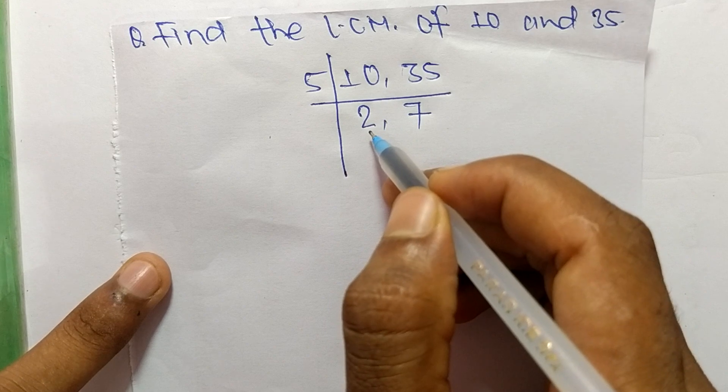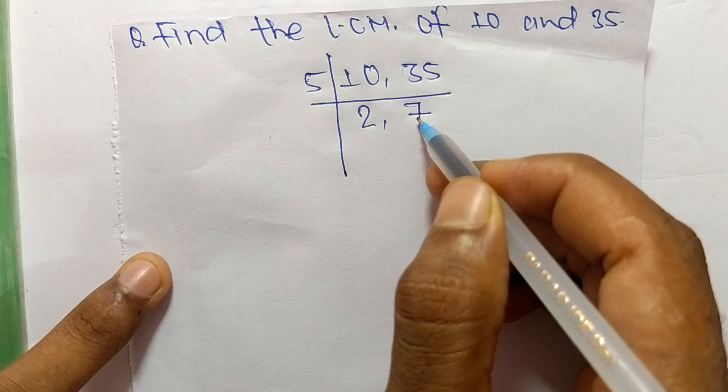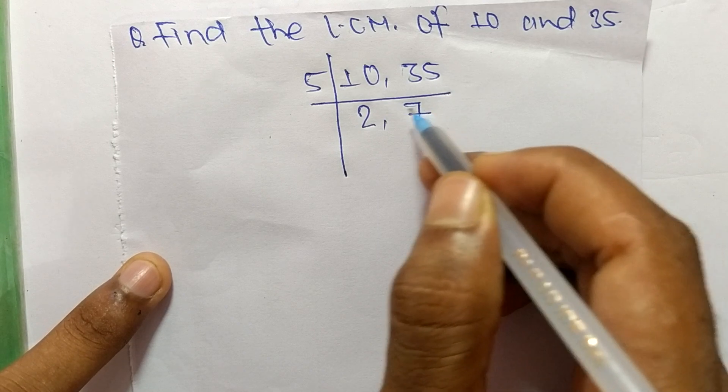If we take 2 then it can divide 2 but can't divide 7, and if we take 7 then it can divide 7 but can't divide 2.